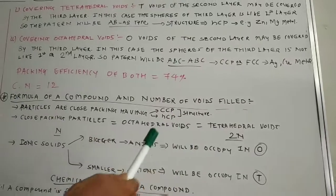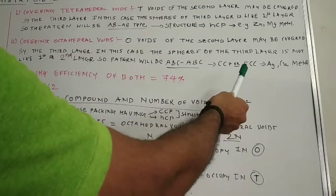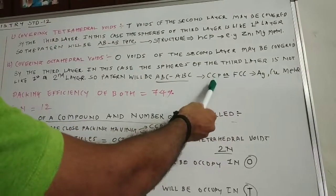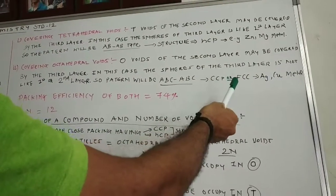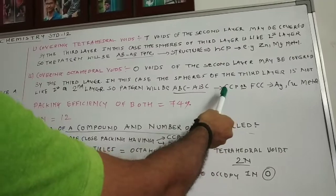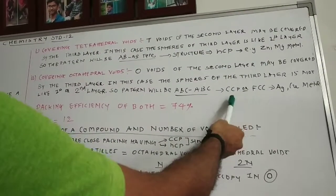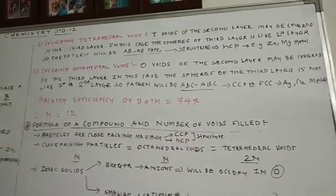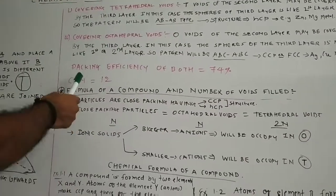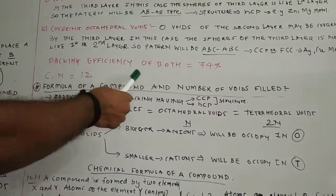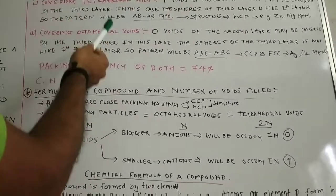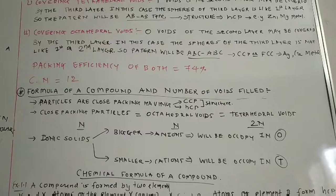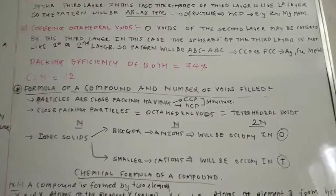If you remember the previous video, I mentioned that FCC has two forms — one is CCP and the second is HCP, and both structures are similar. Examples of metals include zinc and magnesium for HCP, and silver and copper for CCP/FCC. The packing efficiency of both tetrahedral and octahedral void arrangements is 74%, and the coordination number is 12.